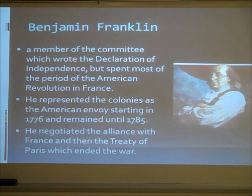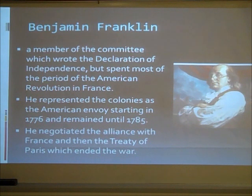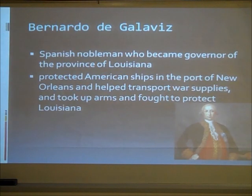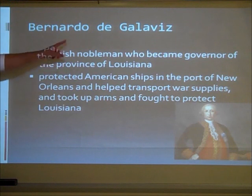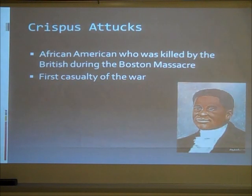Ben Franklin was a member of the committee which wrote the Declaration of Independence, but he spent most of the revolution in France trying to get France's help for the patriots. He represented the colonies as the American envoy starting in 1776 and remained until 1785. He negotiated the alliance with France and also negotiated the Treaty of Paris which ended the war. Wentworth Cheswell was an African-American patriot who, like Paul Revere, made the same all-night ride from Boston to warn his community of the impending British invasion, served in the army, and fought at the Battle of Saratoga.